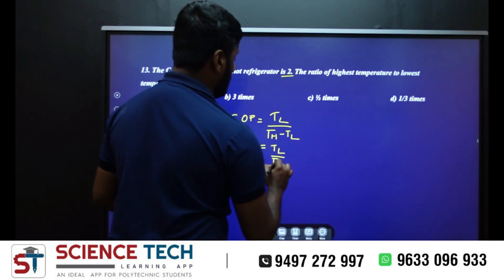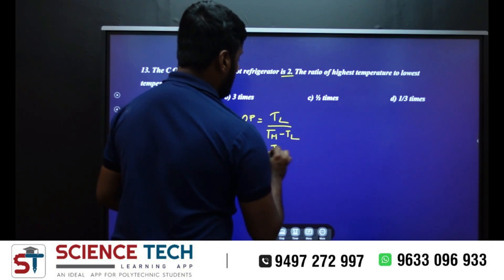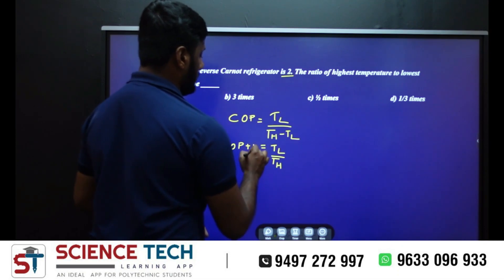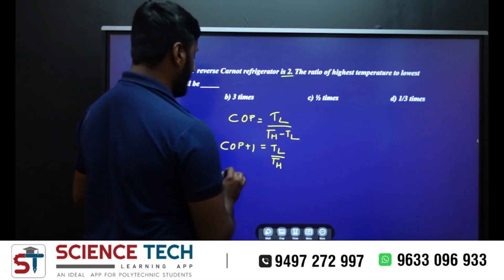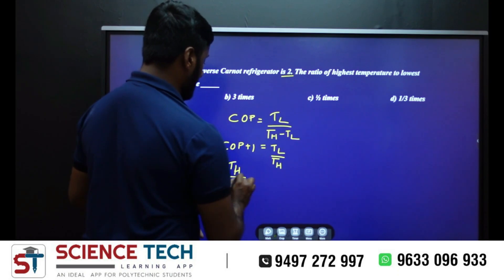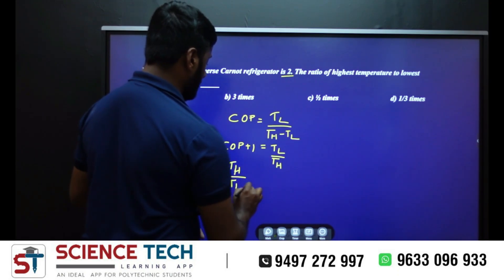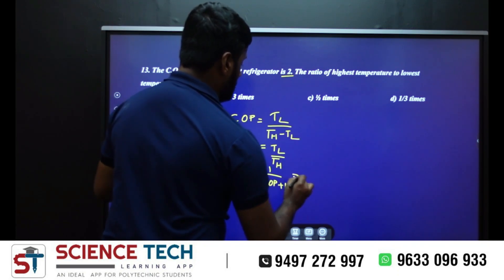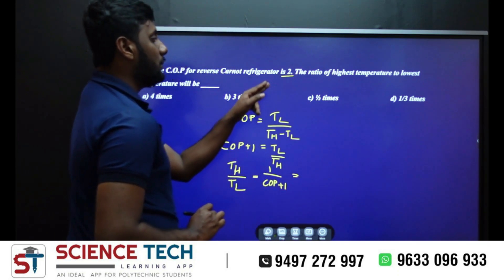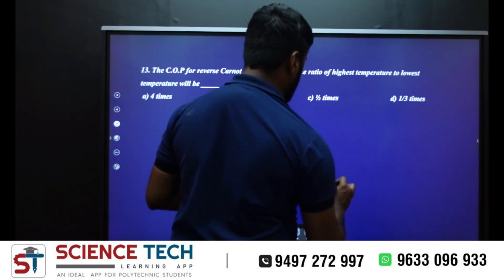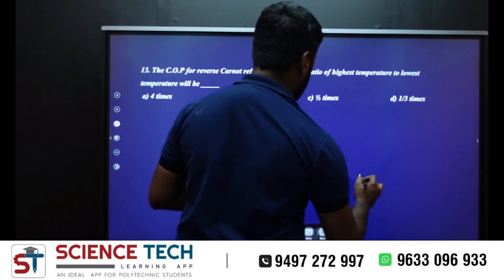TL by TH is equal to 1 divided by COP plus 1. So 1 by 2 plus 1, that is 1 by 3.